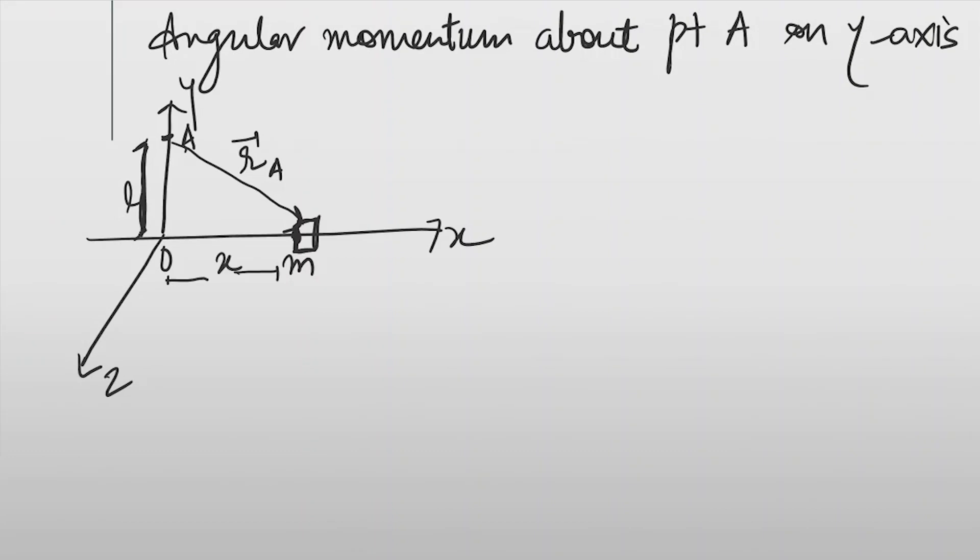We are given this length L on the y-axis, so this is point A. Now this is R_A. To find out L_A, we first find out the expression for R_A. This R_A will be equal to x i cap minus L j cap, because it is in the downward direction.